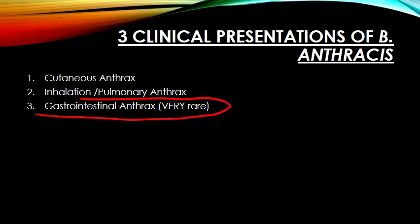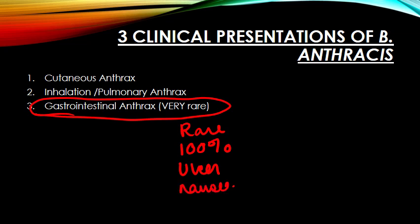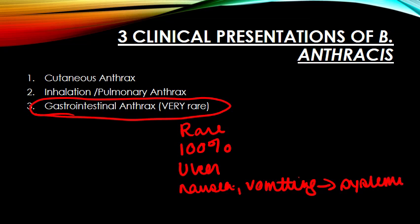Gastrointestinal anthrax is not something we'll spend much time on — it's extremely rare in the United States, but has a mortality rate approaching 100%. An ulcer forms at the site of invasion and extends along the intestinal tract. The patient experiences nausea, vomiting, and malaise, which rapidly progress to systemic disease, toxemia, and death. Thankfully, this form is very rare.